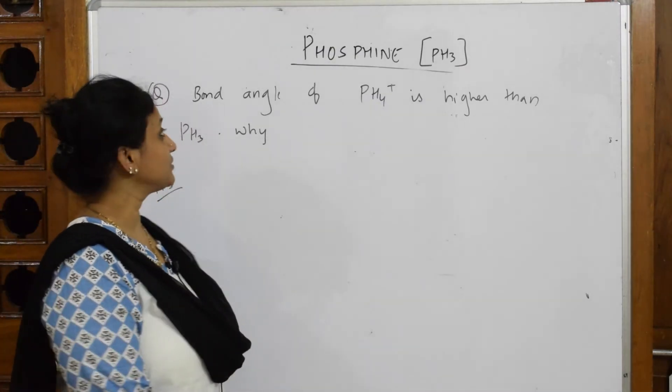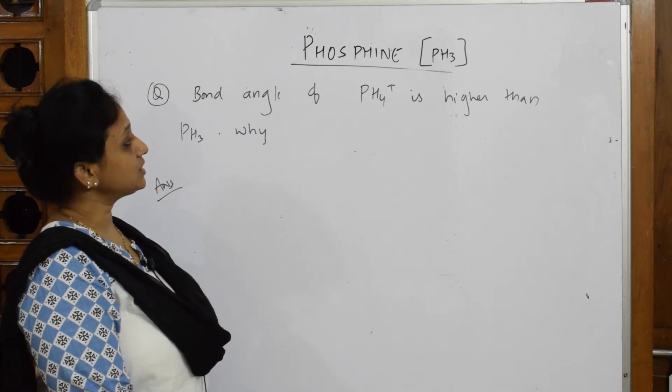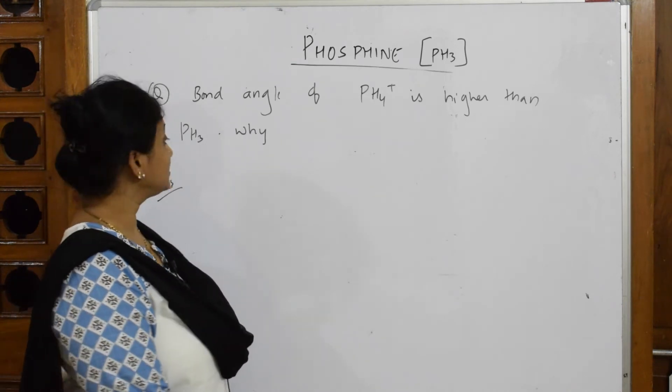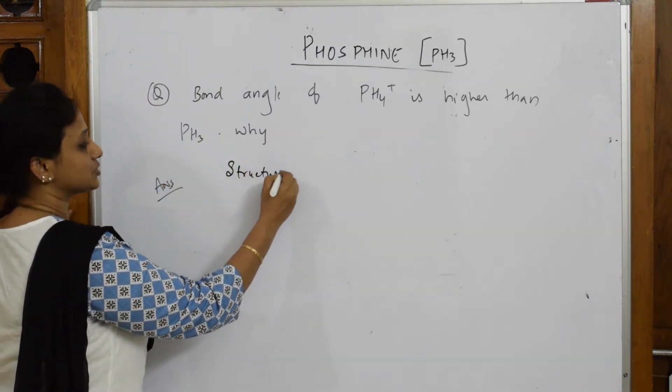Let's come back and do this question: Why is the bond angle of phosphonium ion higher than phosphine? As soon as such a question is given to you, try to draw the structure.